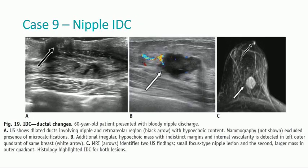Nipple invasive ductal carcinoma in a patient that also presented with bloody nipple discharge. The ultrasound shows a dilated duct involving the nipple and the retroareolar region with hypoechoic content. The mammography excluded the presence of microcalcifications. An additional mass with suspicious characteristics was detected in the left outer quadrant of the same breast. The MRI identified both lesions that were later confirmed as invasive ductal carcinoma.